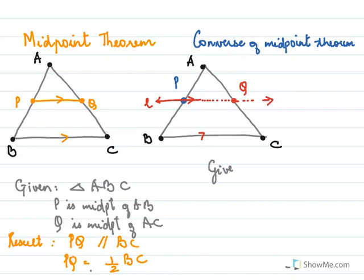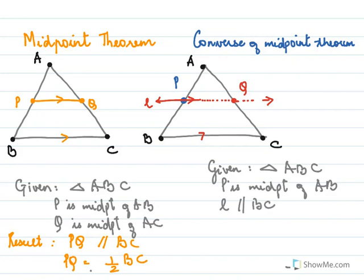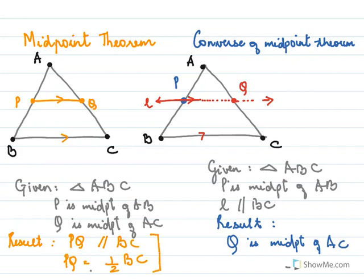For the converse, given triangle ABC: P is the midpoint of AB and we have a line parallel to BC. The result is that Q is the midpoint of AC. Notice the difference: for the midpoint theorem, two midpoints are given, so we say PQ is parallel to BC. For the converse, one midpoint and one parallel line are given, so we say the other intersection point is also a midpoint.